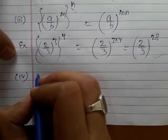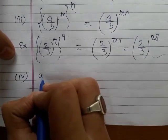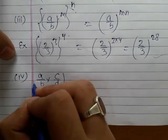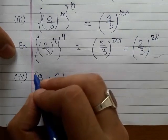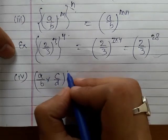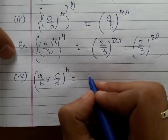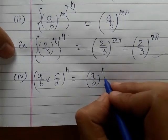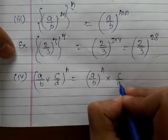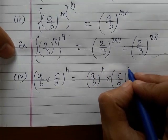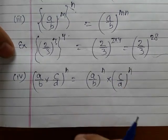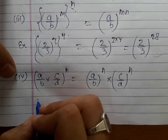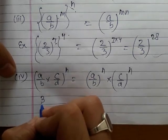The fourth law: if there are two rational numbers a over b and c over d, and both are being multiplied and the whole is raised to the power n, then we can write (a/b)^n multiplied by (c/d)^n.